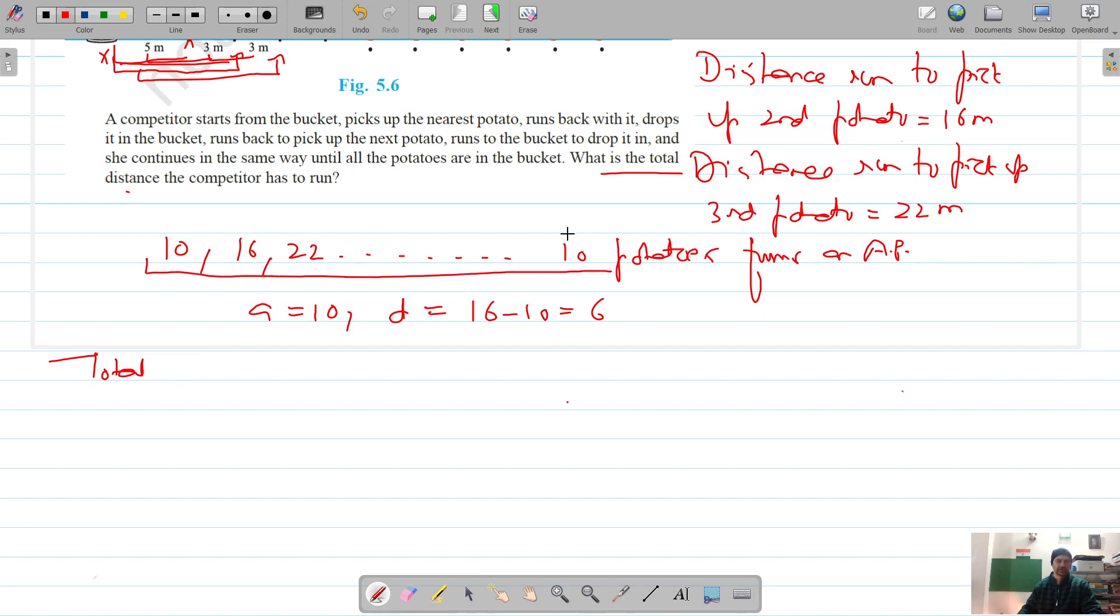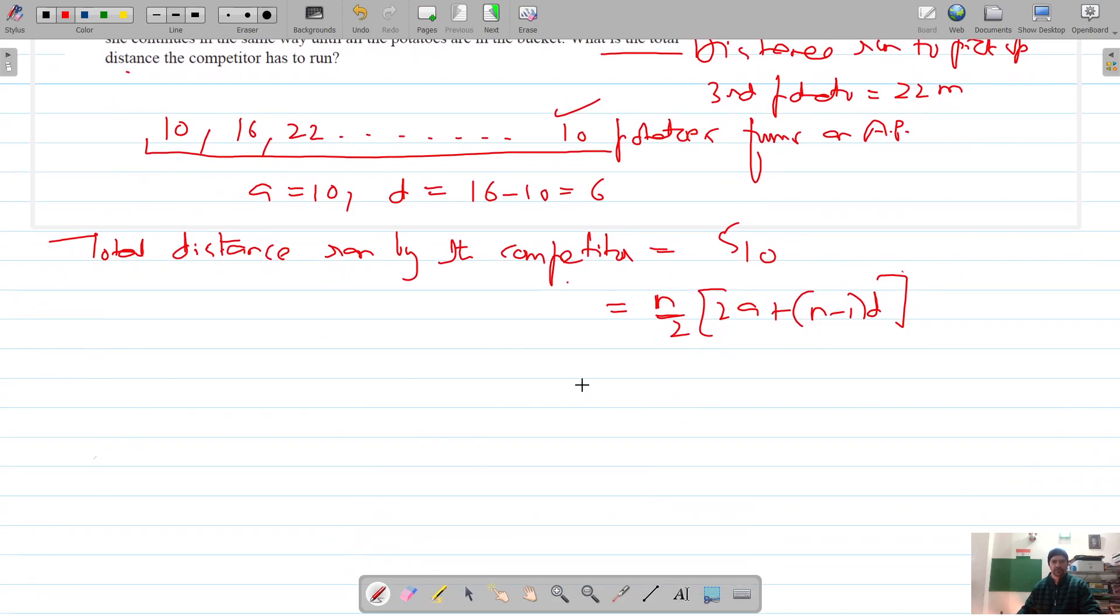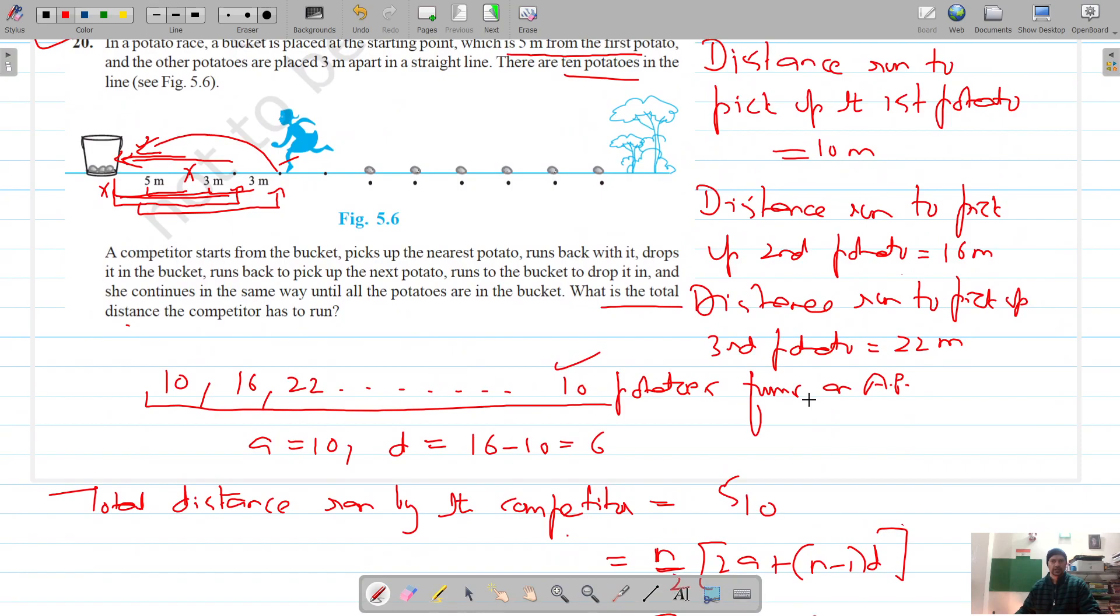Total distance ran by the competitor is equal to S10, which is n by 2 into 2a plus (n minus 1) into d. So our n is 10, so it's 10 by 2, 2 into a is 10, and 10 minus 1, and d is 6.